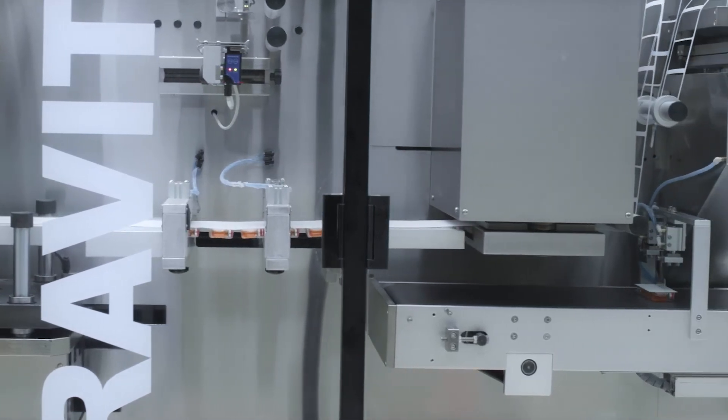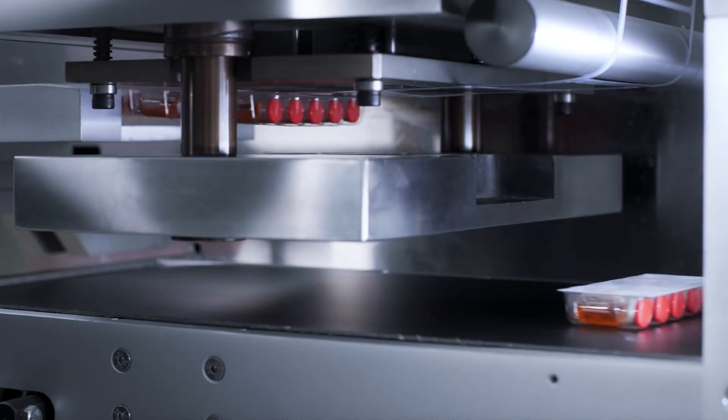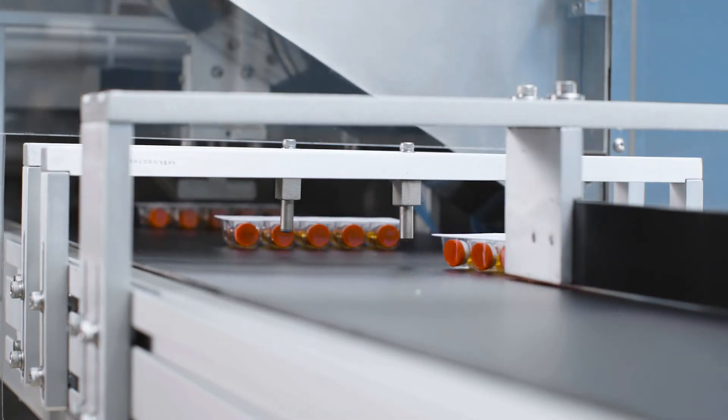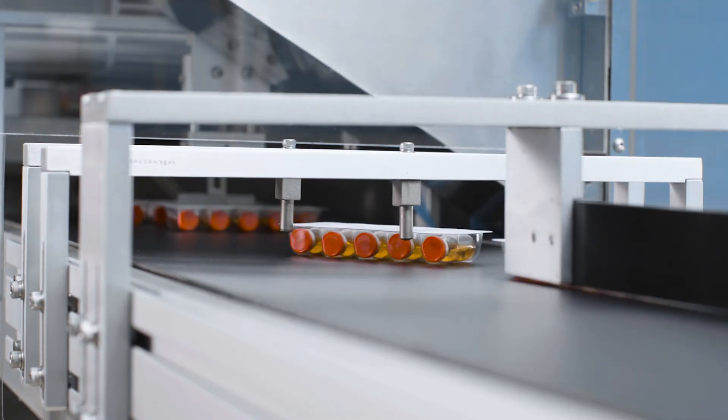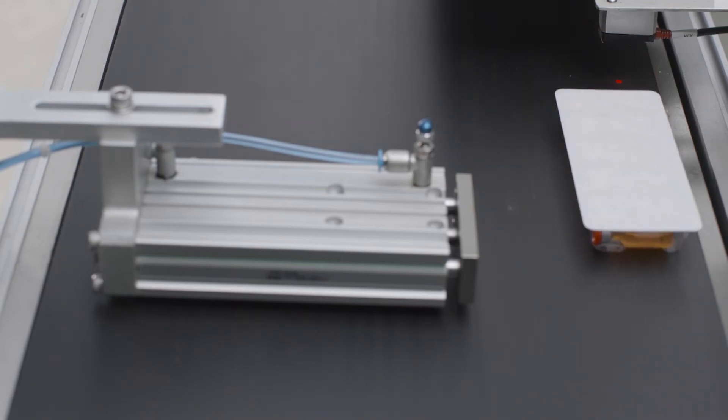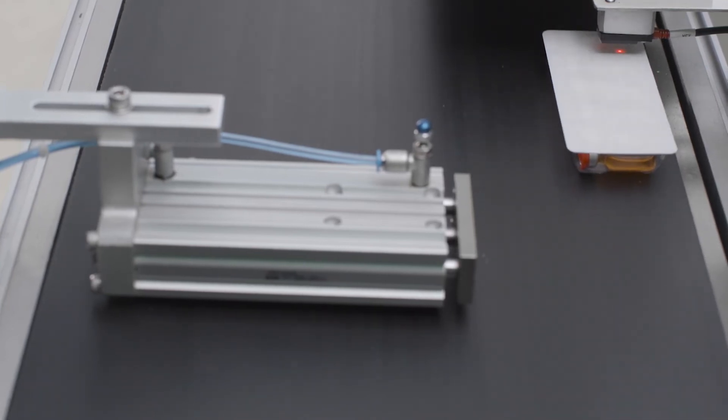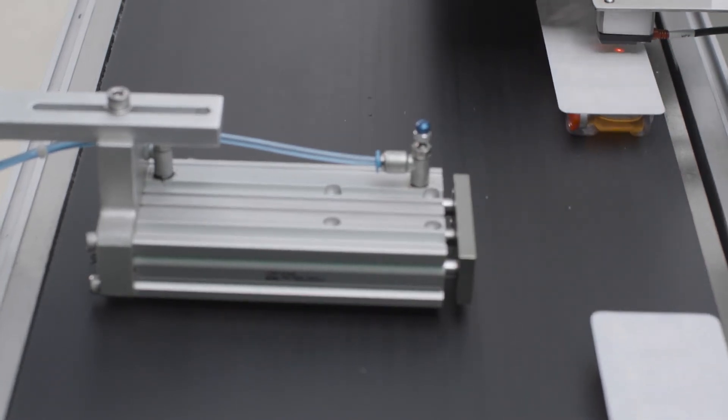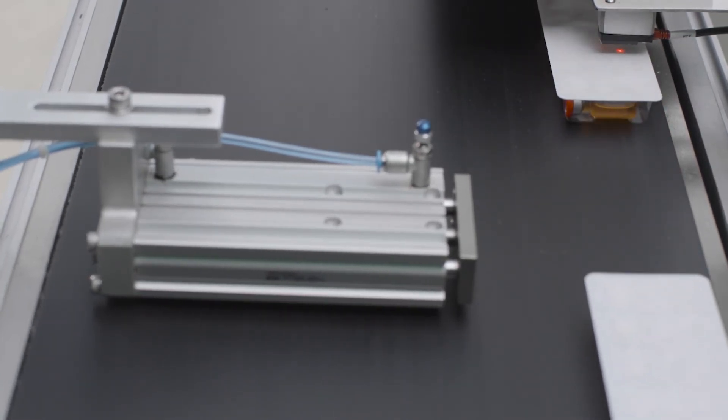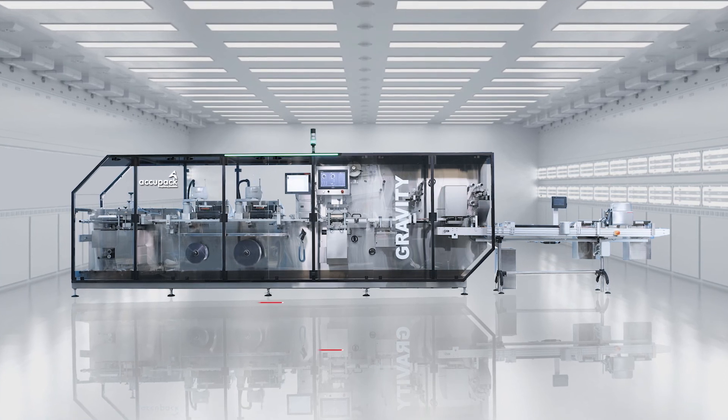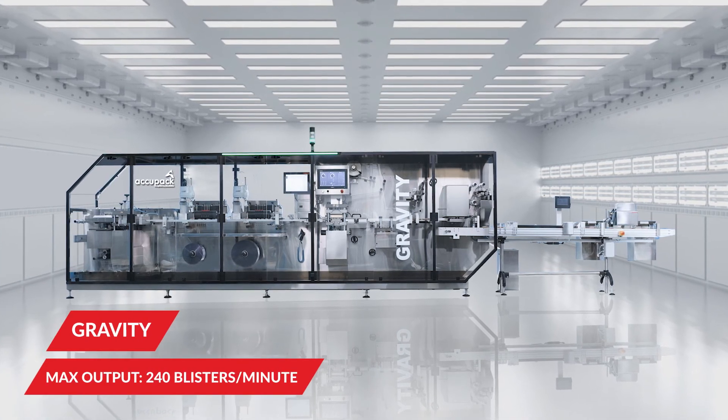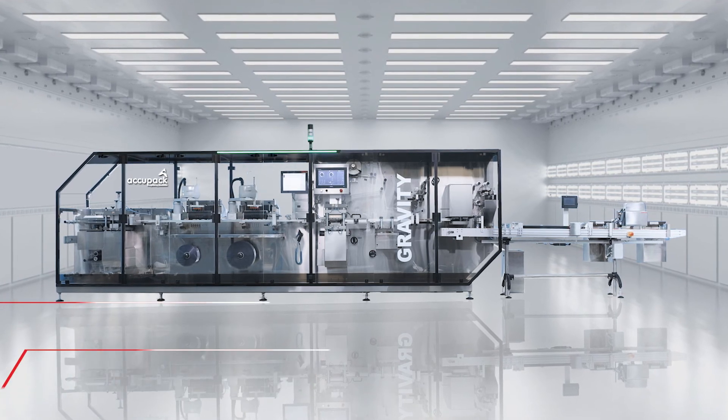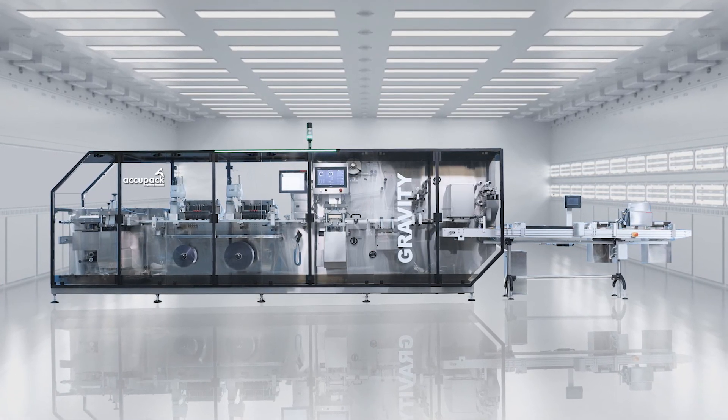Delivering an output of up to 240 blisters per minute, Gravity can be connected seamlessly for downstream automation to Acupack's range of Galaxy cartoning machines. Gravity is adaptable to 21 CFR Part 11 compliance and can be enabled with Industry 4.0 technology, making it future ready.